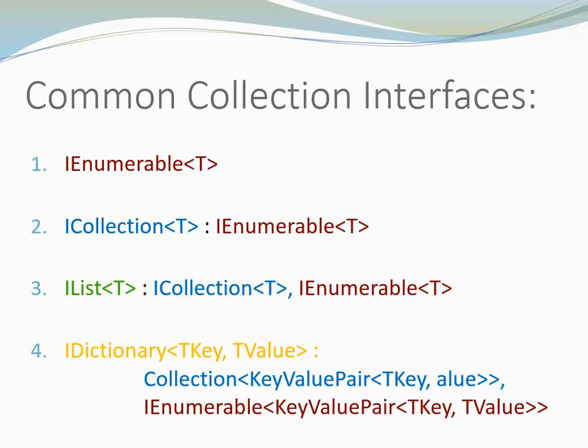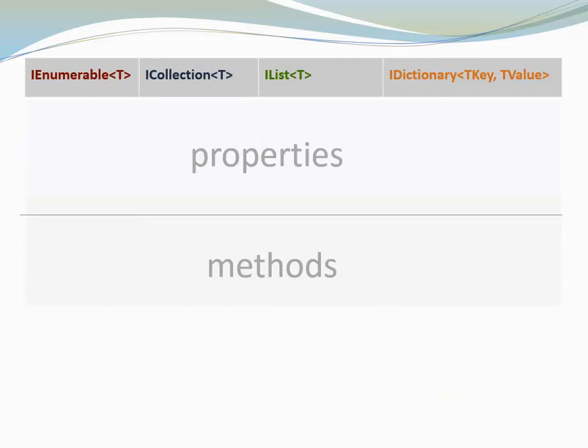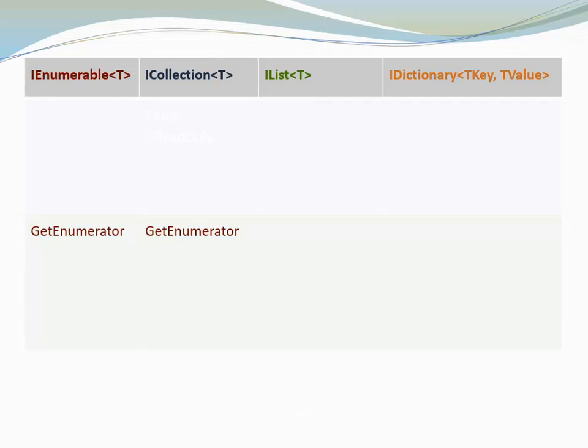Here we have the four interfaces again, but this time we'll add more detail. The properties we'll list at the top and the methods we'll list at the bottom. Here you can see the interface members of IEnumerable. It is one single method and it is named GetEnumerator. ICollection extends IEnumerator, which means it inherits all its members and it adds some additional new ones.